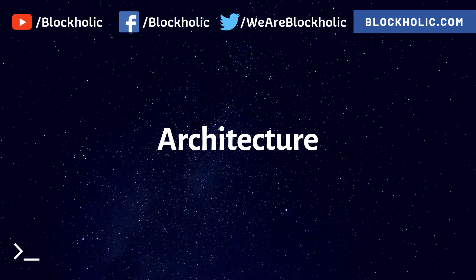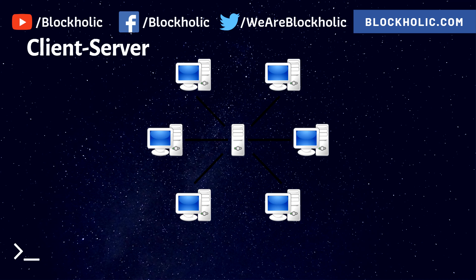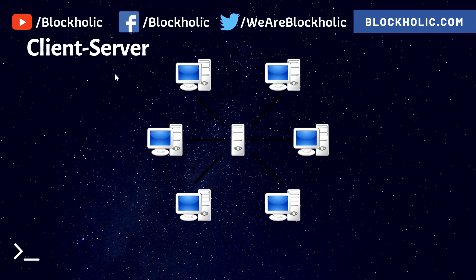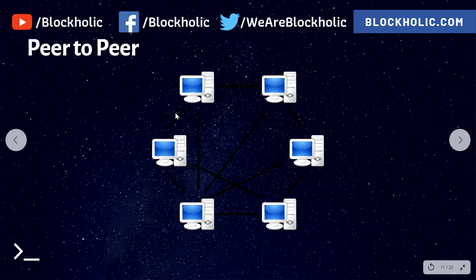Now, what is the architecture of a blockchain? First, let's understand the current client-server architecture. If you take any organization — say Google or Facebook — these companies have their database at one particular place, and that same database is accessed by users across the globe. Sometimes you get a message saying the server is down and you cannot access the system. That means the server, located at headquarters, is not accessible — that is the client-server architecture, where a central server connects all other computers and shares data.